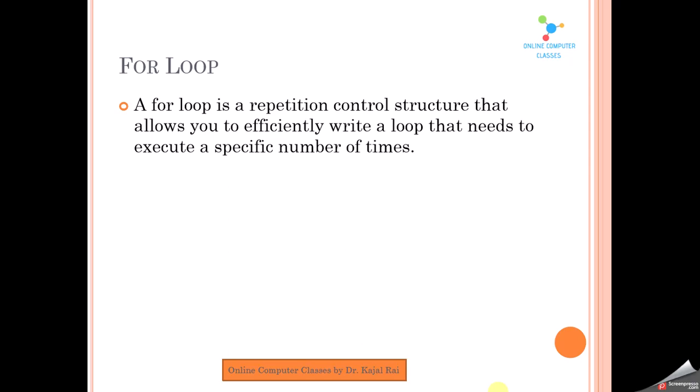Now it's time for the for loop. A for loop is also a repetition control structure that allows you to efficiently write a loop — a sequence of instructions that need to be executed a specified number of times. In the while loop, you do not know when execution will end, or you use the while loop when you don't know exactly how many times the statements will repeat. But in a for loop, you already know how many times the statements are going to repeat. This is the main difference between while loop and for loop.